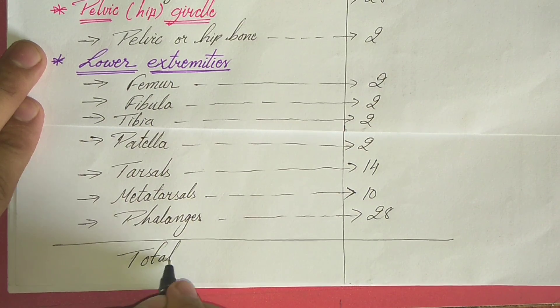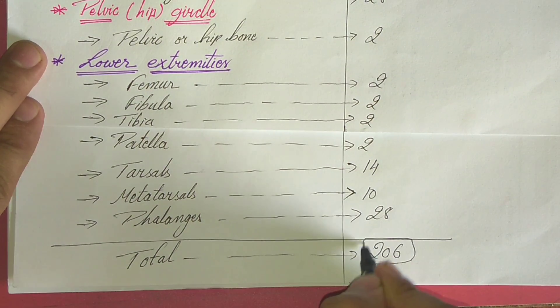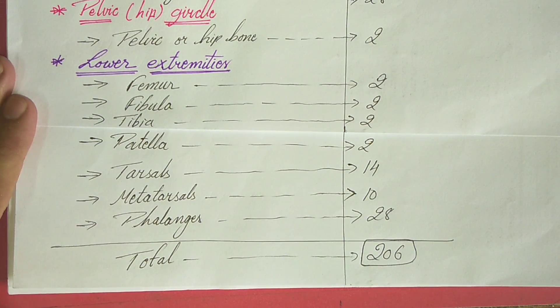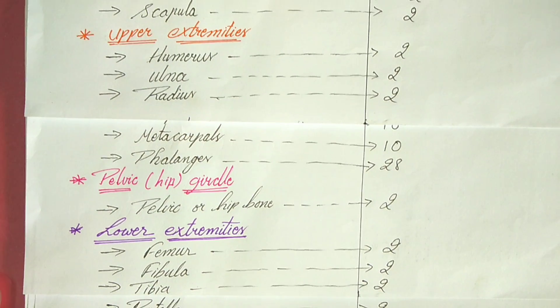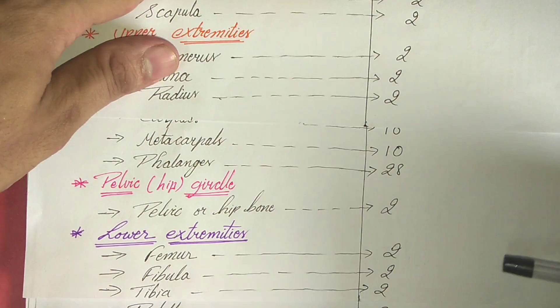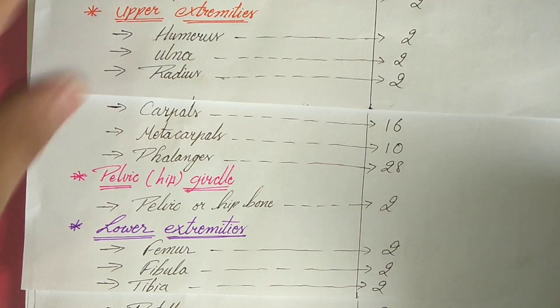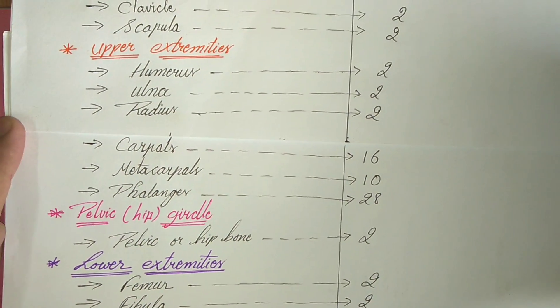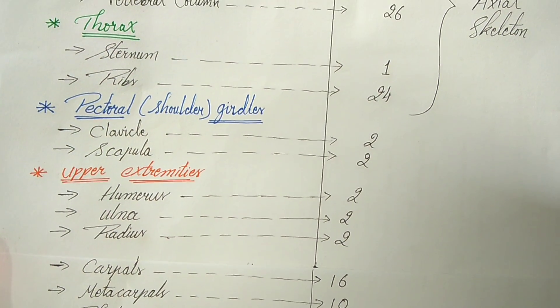So total bones in human body is around 206. 206 bones are present in human body. So lower extremities, pelvic girdles, upper extremities, you can see the lower extremities and pelvic girdles and upper extremities, the bones are present.